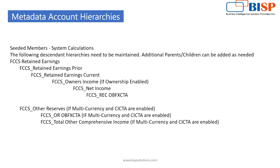For the major data hierarchy, we have parent-child relationships. Under every hierarchy we have running prior, current, owner's income, and net income. If multi-currency and CI CTA are enabled, we have 'FCCS_OB_FX_CTA', and the second member is 'FCCS_Total_Other_Comprehensive_Income'. This is the sort of hierarchy we have in the metadata of the account dimension.